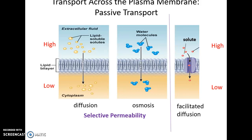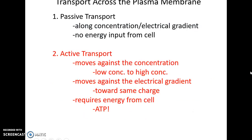We also get facilitated diffusion, where transmembrane proteins allow some molecules to move from high concentration to low. Active transport, on the other hand, moves materials against the concentration gradient — from low to high concentration — or against the electrical gradient, and it requires energy in the form of ATP.